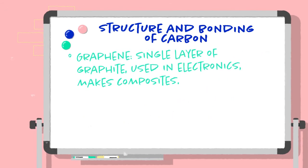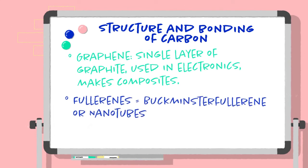Graphene is a single layer of graphite and can be used in electronics to make composites. There are two fullerenes: Buckminster fullerene, which is spherical and slippery, and nanotubes, which have a high length to diameter ratio.